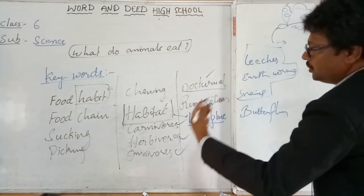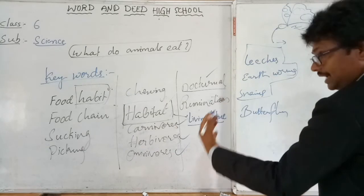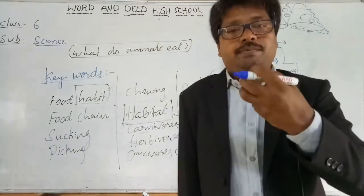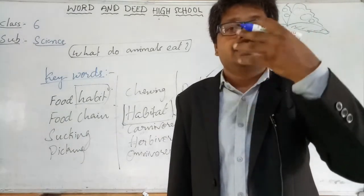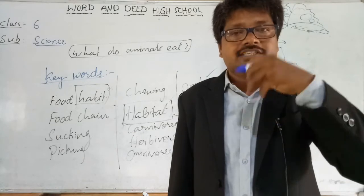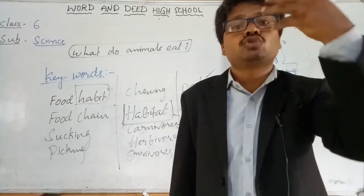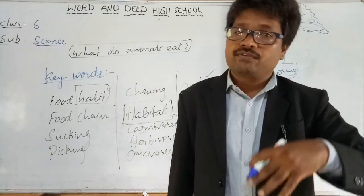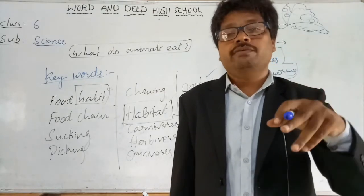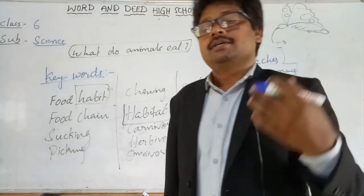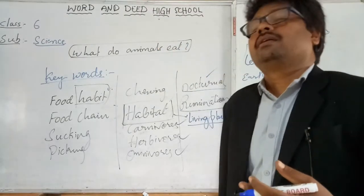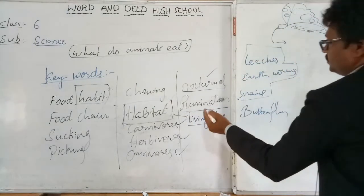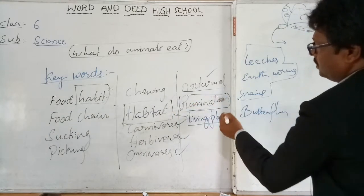Nocturnals are living things which come out only during nights to collect their food. Rumination is a process of bringing partly digested food from the stomach back to the mouth, chewing it again, and swallowing it. Examples include cows, camels, goats, and sheep — they are ruminants.